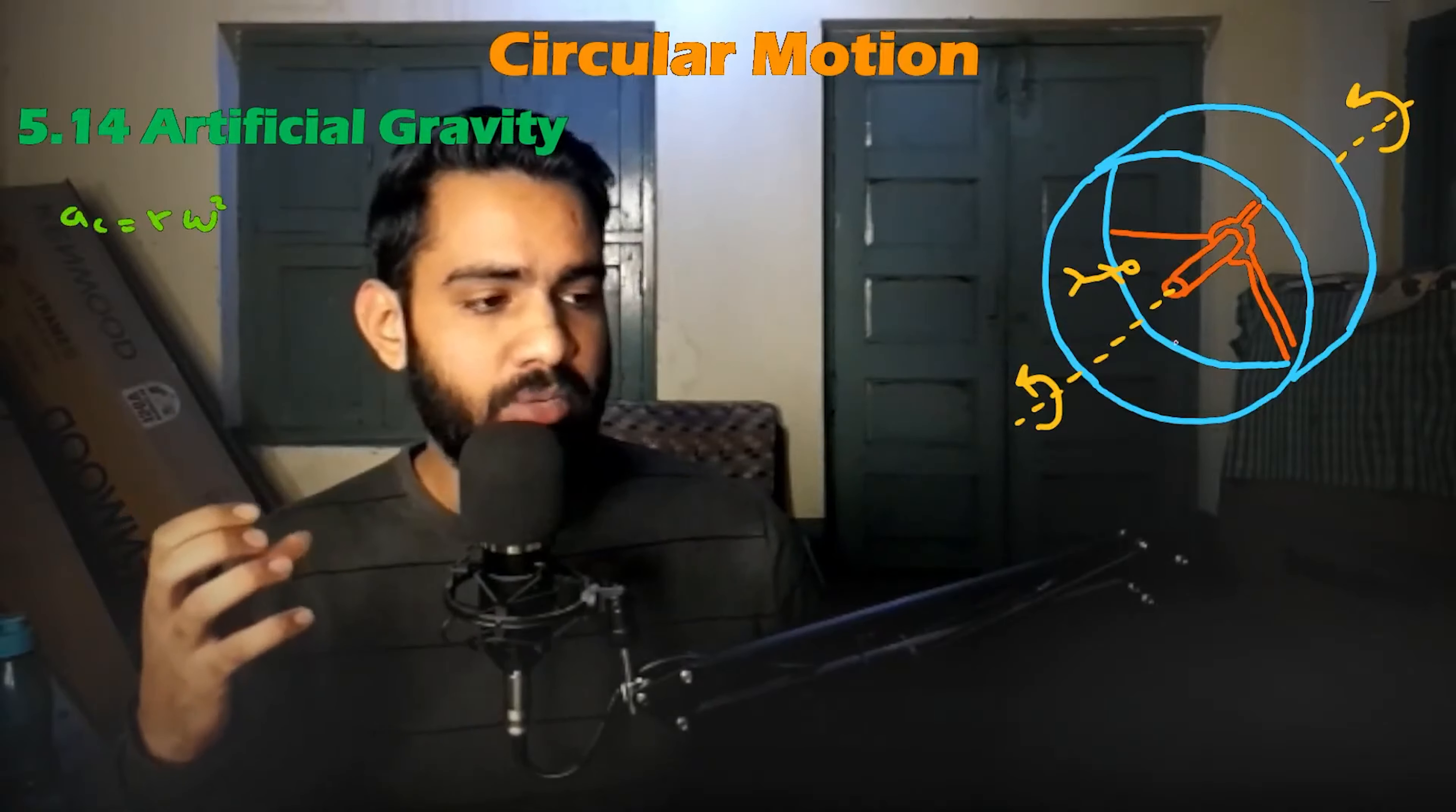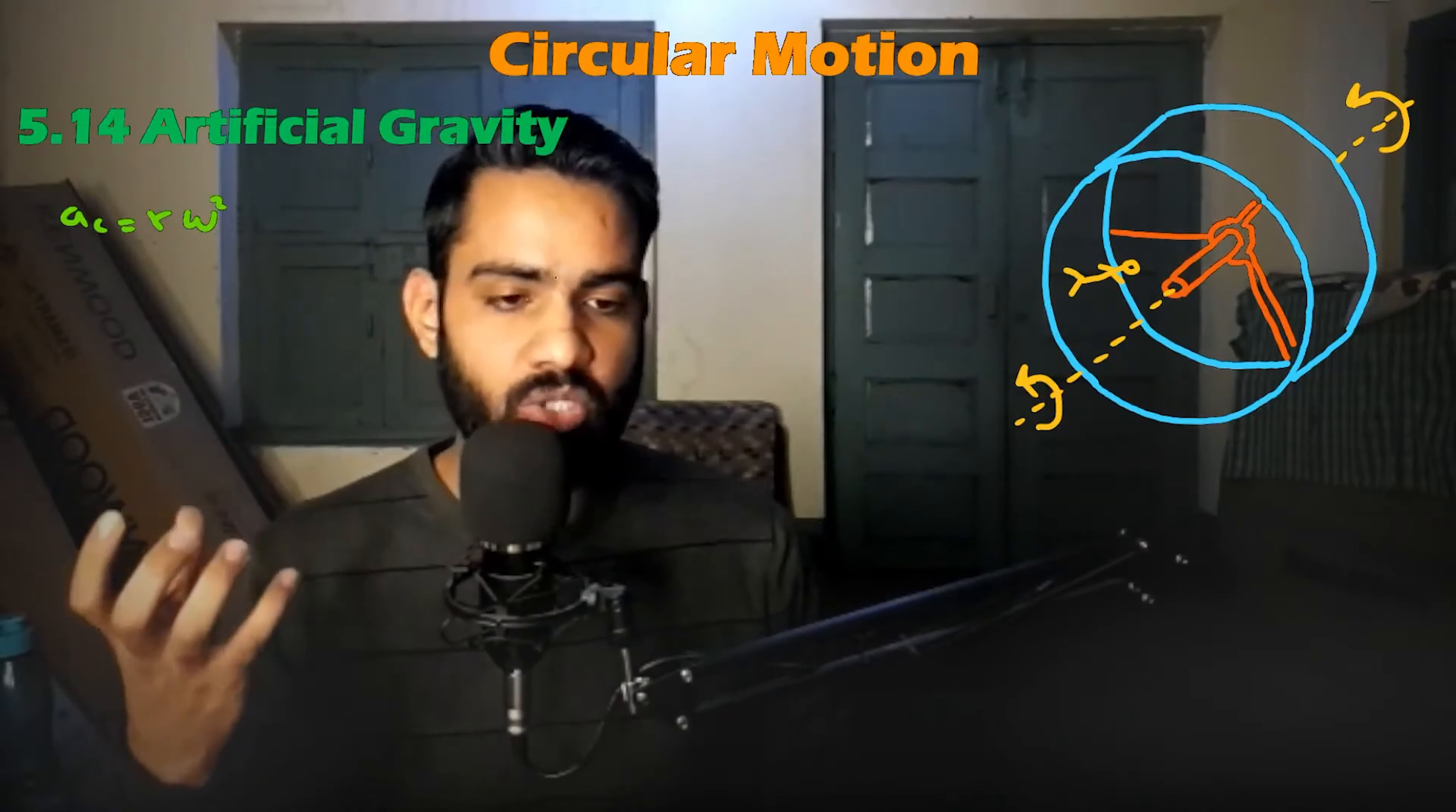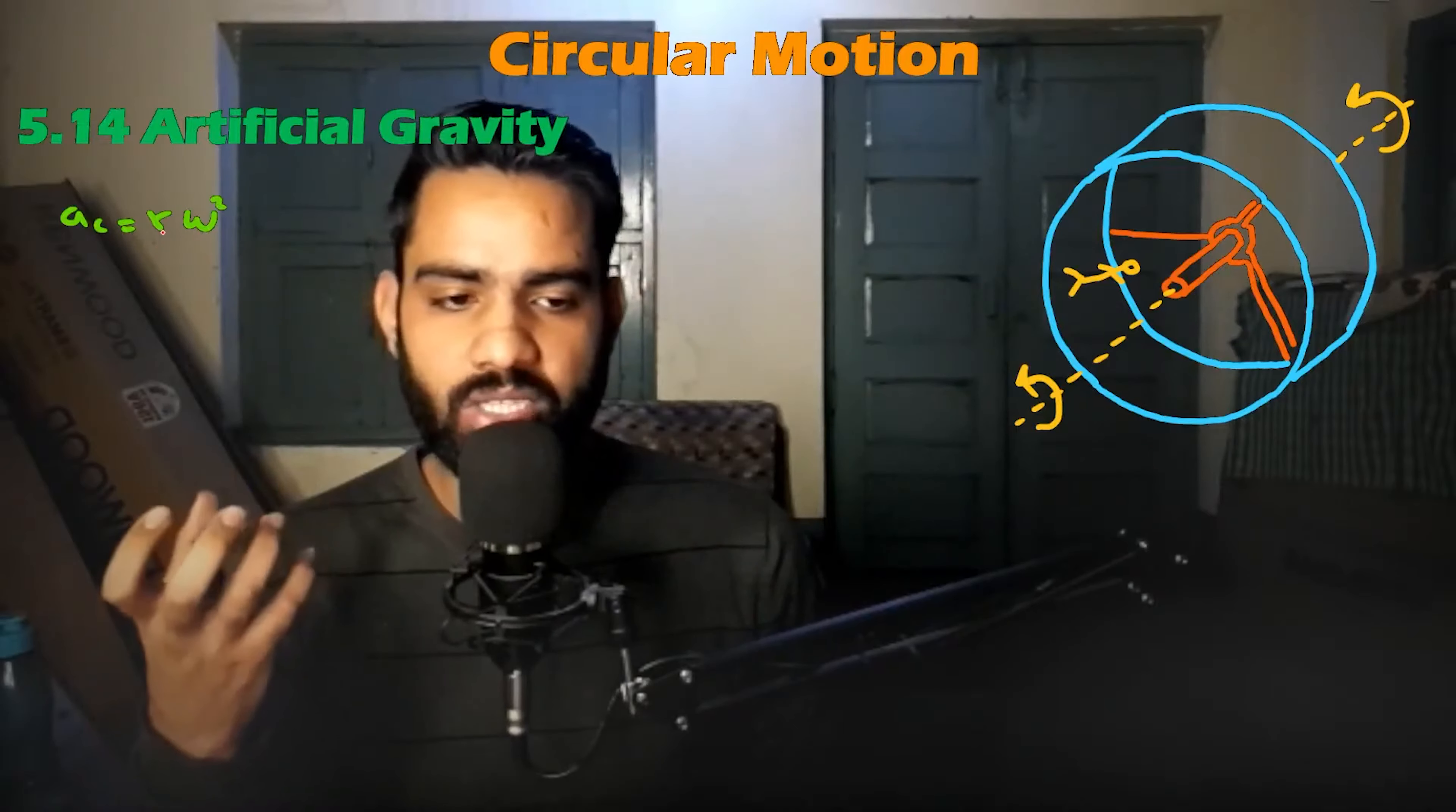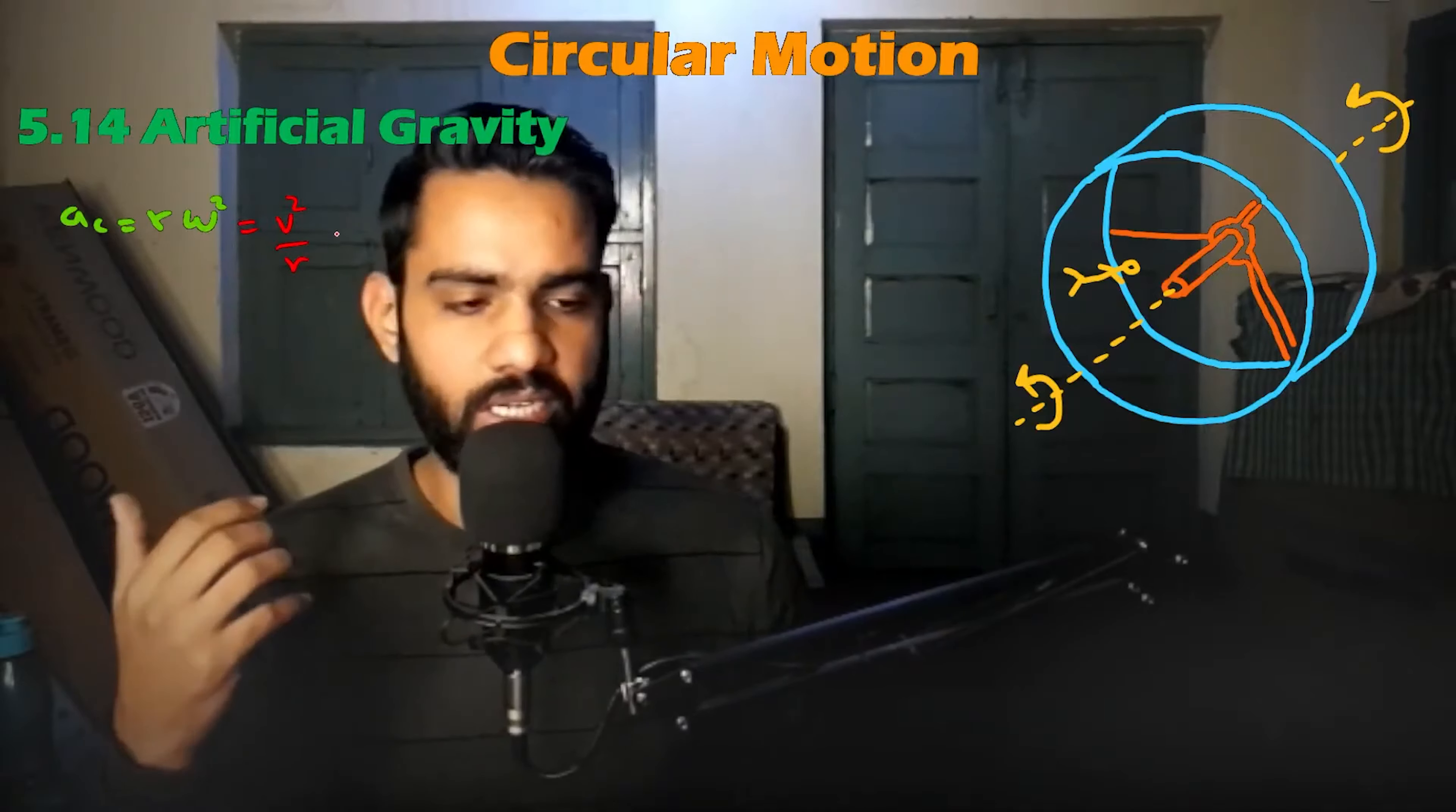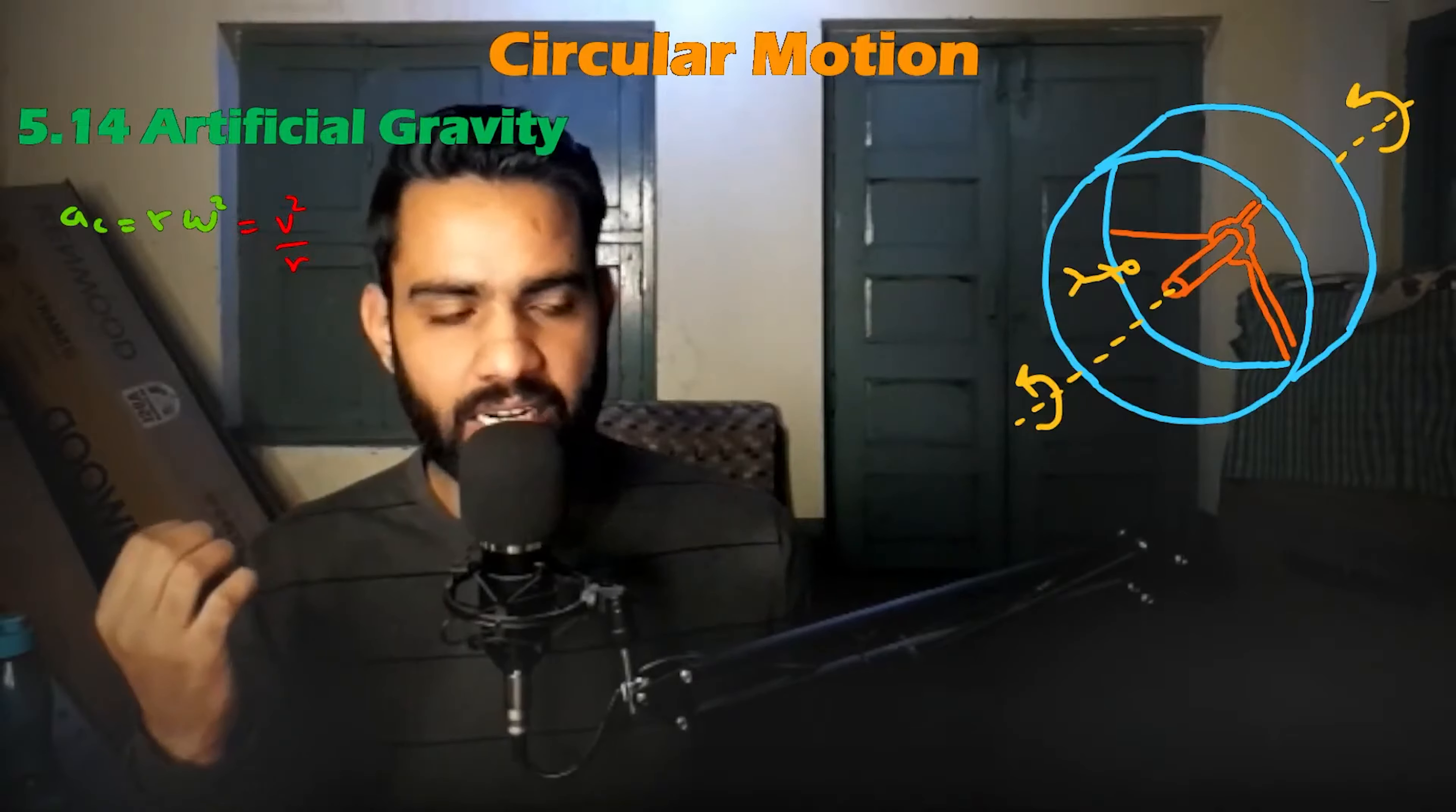In this case, for example, if our ship rotates, there will be some acceleration which is centripetal acceleration: ac equals r times omega squared, or v squared divided by r.